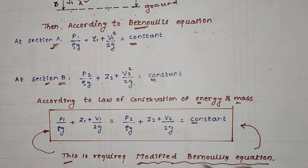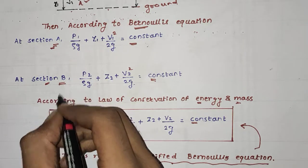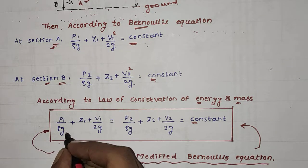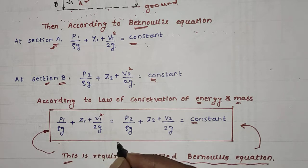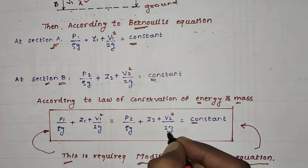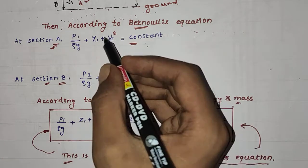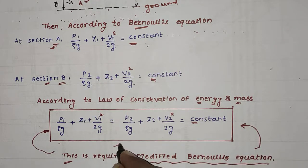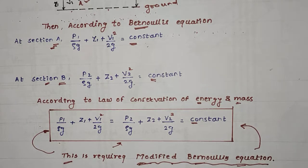According to the law of conservation of energy and mass, the Bernoulli's equation at section A equals that at section B, giving the final expression: p1/(ρg) + z1 + v1²/(2g) = p2/(ρg) + z2 + v2²/(2g) = constant. This expression is called the modified Bernoulli's equation and is one of the most important equations in fluid mechanics.